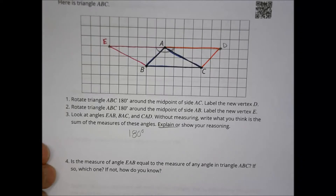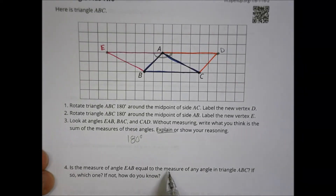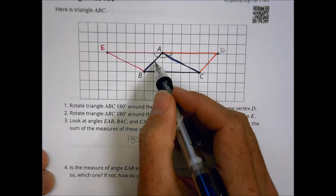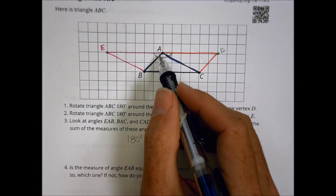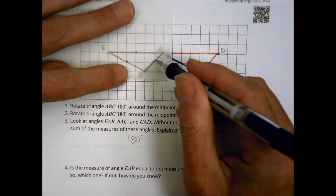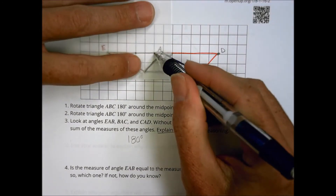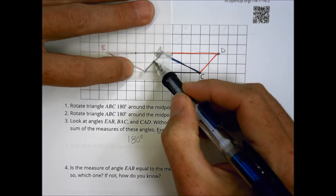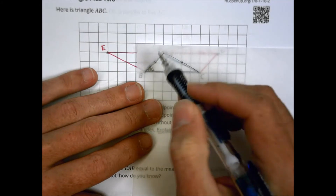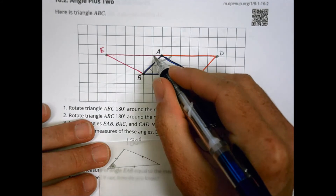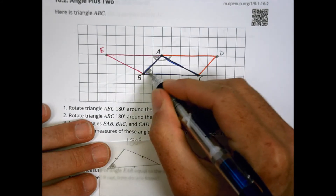Now, if we ask whether angle EAB is equal to any other angle within triangle ABC — yes, it is. That's because when we rotated things around, that triangle came from somewhere else. When I rotate around that midpoint, I'm looking at this angle here. When I rotate it 180 degrees, it ends up snapping right here. So this angle measurement is congruent to that angle measurement.